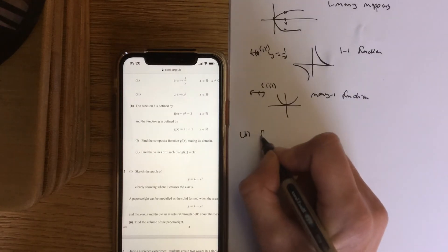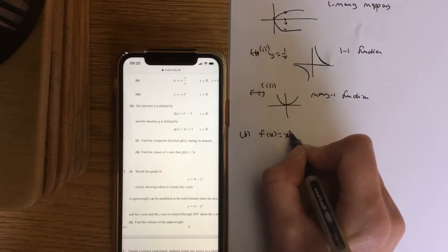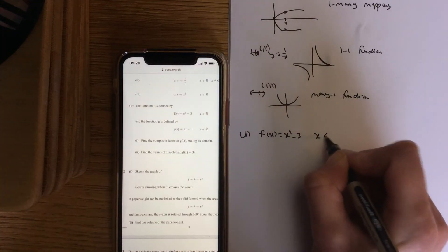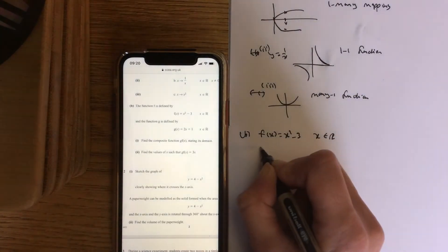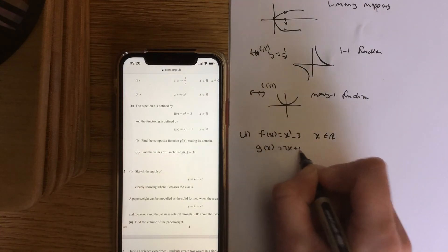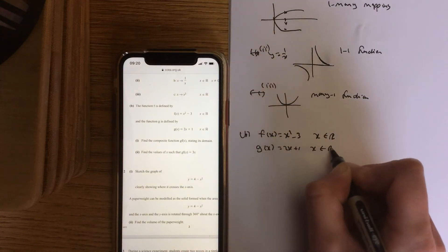Part B, you have got f(x) equals x squared minus 3. x belongs to the real numbers, so it's any number there. g(x) is 2x add 1. Again, x can be any number.